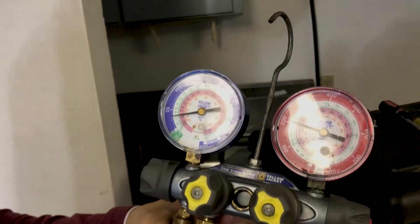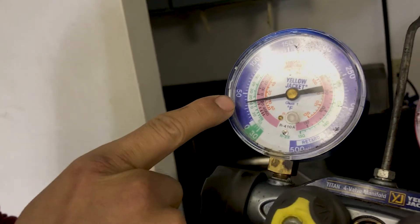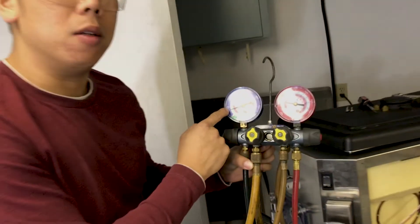So after letting the machine run for about five minutes, you're going to see that after our adjustment, it's floating right between 30 and 35. And that's exactly where we need to be.